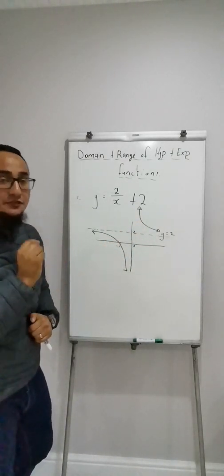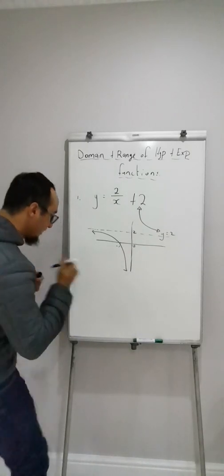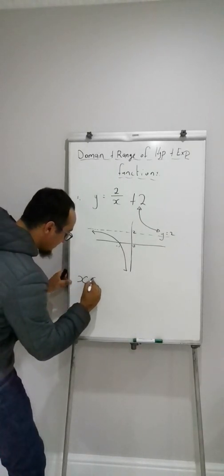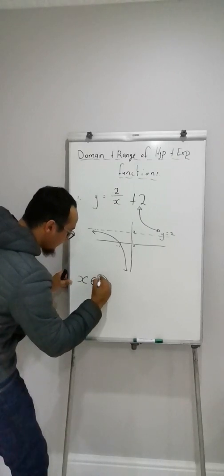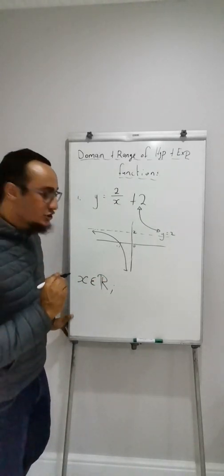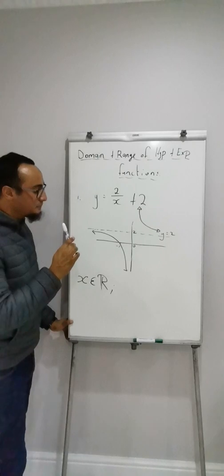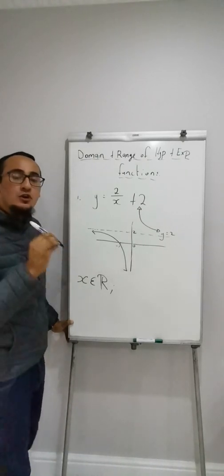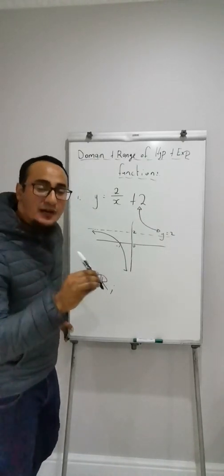We're going to look at the domain and the range. Domain is x is an element of real numbers, but I have a restriction. A restriction basically is where my graph will not touch, in other words, my asymptote.